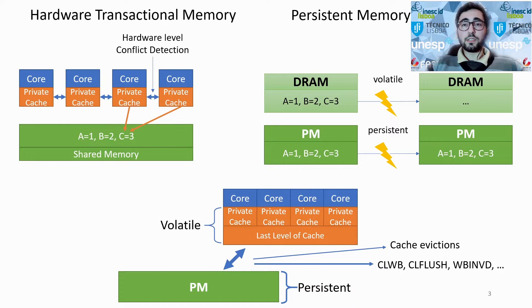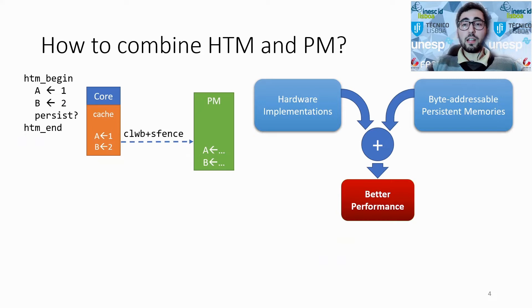Thus, it is necessary to explicitly manipulate them via flush instructions. A major limitation in designing HTM plus PM systems, following a standard write-ahead logging approach, is the fact that if an HTM transaction tries to flush data from the CPU caches while inside the HTM context, the transaction deterministically aborts.